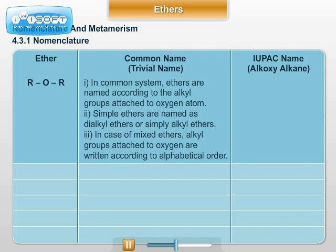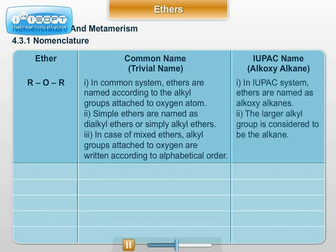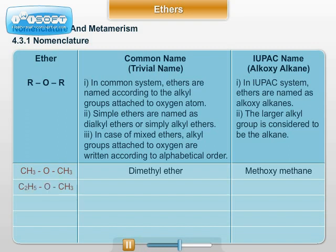In the IUPAC system, ethers are named as alkoxyalkanes. The larger alkyl group is considered to be the alkane. Example: CH₃OCH₃ — common name dimethyl ether, IUPAC name methoxymethane. C₂H₅OCH₃ — common name ethyl methyl ether, IUPAC name methoxyethane. Note: C₂H₅OCH₃ is methoxyethane and not ethoxyethane, because the larger alkyl group, ethyl, is considered as the alkane.